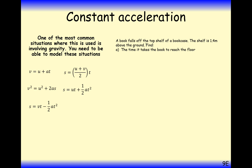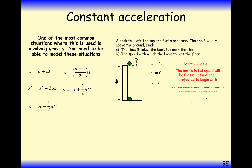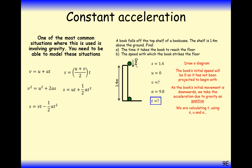A book falls off the top of a bookshelf. The shelf is 1.4 metres above the ground. Find the time it takes to reach the floor and the speed at which it strikes the floor. Draw a little diagram. Since it falls from rest, the starting velocity is zero. It travels 1.4 metres, and acceleration is going downwards, so we can set that equal to positive 9.8.